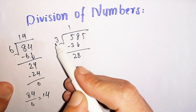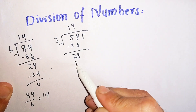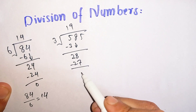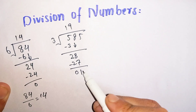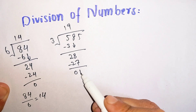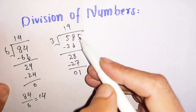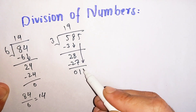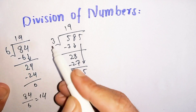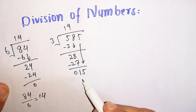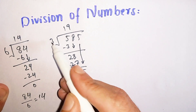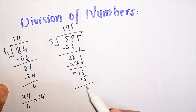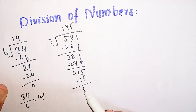3 times 9 is 27. Subtract 27 from 28, the remainder is 1. Now again we cannot divide 1 by 3, so we will bring down the 5 near 1, which becomes 15. How many times does 3 go into 15? 3 times 5 is 15. Subtract 15 from 15, the remainder is 0.